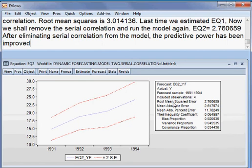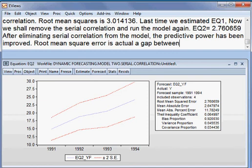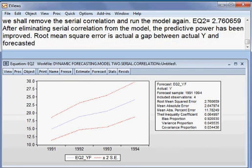Okay. The question is that, what is root mean squared error? Root mean squared error is actually a gap, a gap between actual Y and forecasted Y. So, when the root mean squared becomes big, meaning that the gap between actual Y and forecasted Y is big. So, meaning that the predictive power of that model is not good.